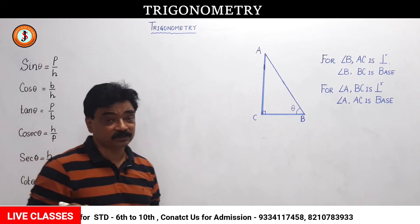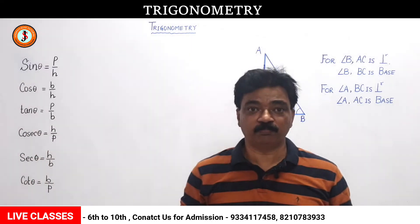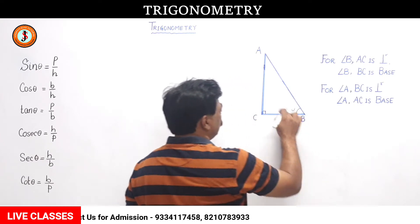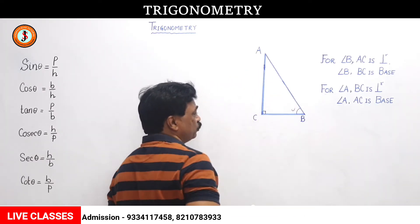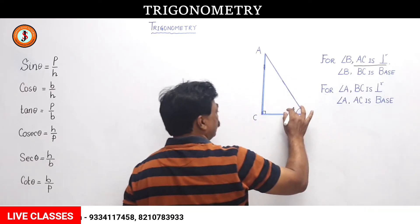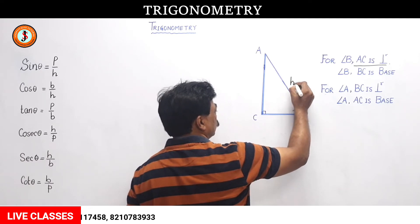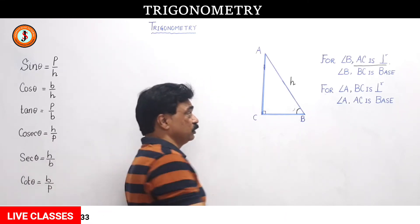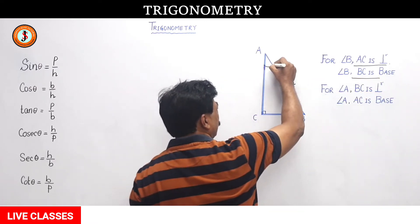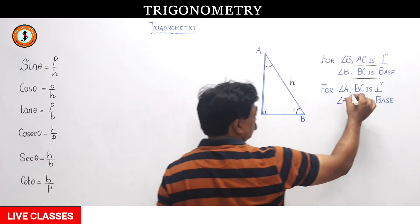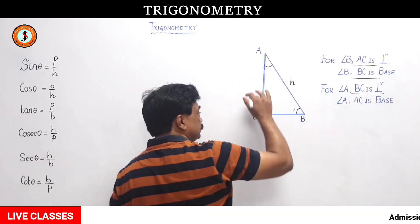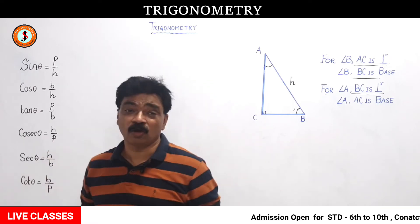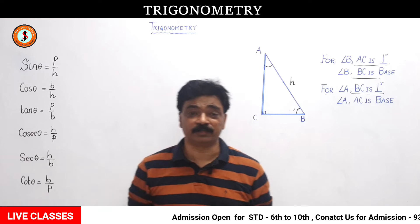One important thing you have to understand: what is perpendicular in trigonometry? Perpendicular is the side opposite to the concerned angle. Suppose for angle B, AC will be the perpendicular — it is the side opposite to angle B — and the hypotenuse is fixed. The base will be the side adjacent to the concerned angle, so BC will be the base. But for angle A, the side opposite to angle A will be the perpendicular, so BC becomes the perpendicular and AC becomes the base. Many people write sin theta as opposite by hypotenuse, meaning the side opposite to the angle you are taking.